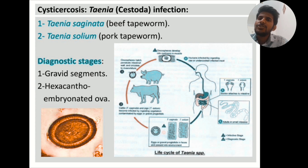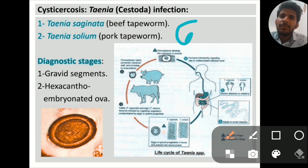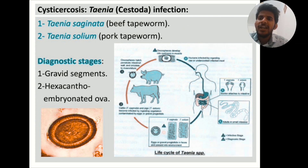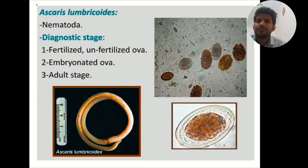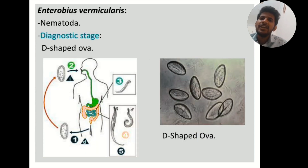Taenia saginata and Taenia solium: an important question is about Taenia saginata, which is the beef tapeworm. Remember the word CATTLE — it contains 'T', and saginata also contains 'T', so Taenia saginata is from cattle — the beef tapeworm. Taenia solium is the pork tapeworm. Other parasites include Ascaris lumbricoides, hookworm Ancylostoma duodenale, and Enterobius vermicularis with a D-shaped ova.